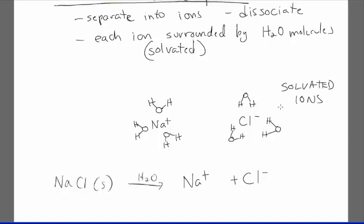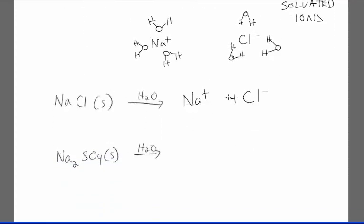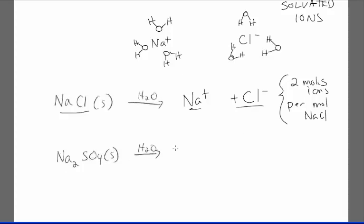Around each ion in solution there will be a solvation sphere of water molecules. Another property of soluble ionic compounds is they conduct electricity — we call them electrolytes, which are substances that will conduct in water. When sodium chloride dissolves, you get two moles of ions per mole of sodium chloride. But when sodium sulfate dissolves in water, you get two sodium ions and a sulfate ion, so for every mole of sodium sulfate you get three moles of ions.